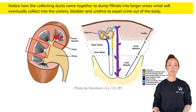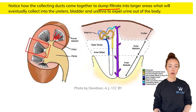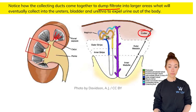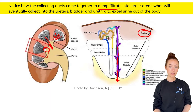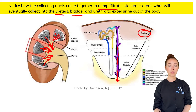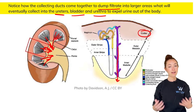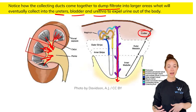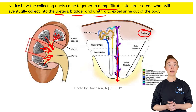Notice how the collecting ducts actually come together to dump filtrate into larger areas. Here we have the nephron — the cortex and the medulla — and the collecting ducts are dumping all of the filtrate, which is now urine, into a larger area. All these collecting ducts collect the urine and put it into the renal pelvis, which then dumps into the ureters, into the bladder, and through the urethra to expel urine out of the body. We've now formed urine all the way from the beginning to the end.